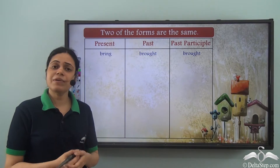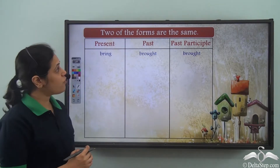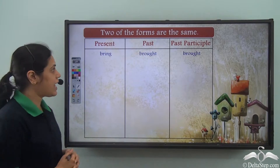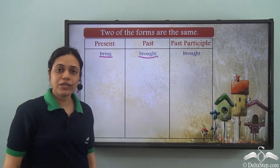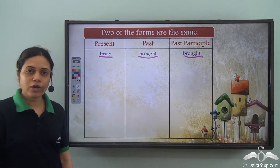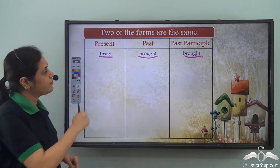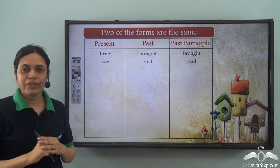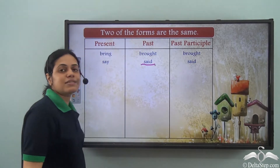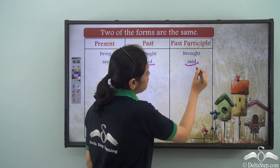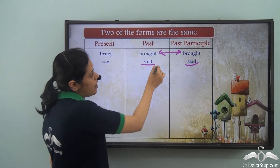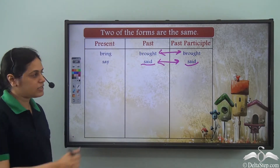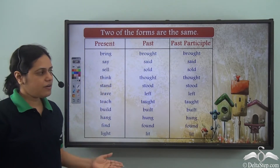We have seen some irregular verbs for which all three forms are the same. But there are certain irregular verbs for which only two forms are the same. Like 'bring' — present tense is bring, past tense is brought, and the past participle form is also brought, the same as past tense. Similarly, 'say' — present is say, past is said, and past participle is also said. The past and the past participle forms are the same.